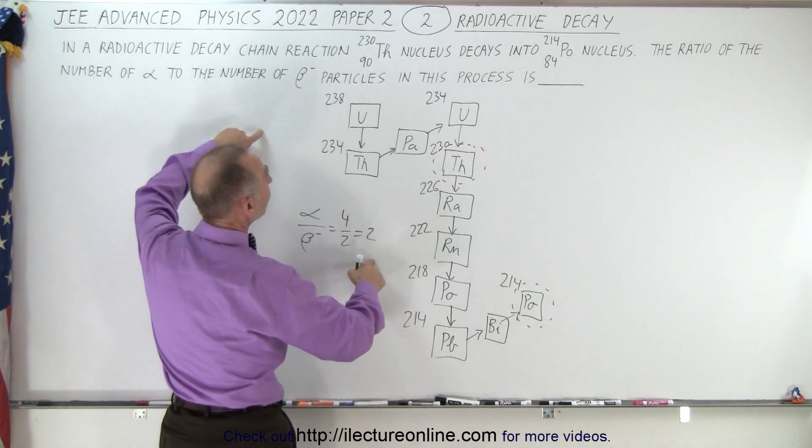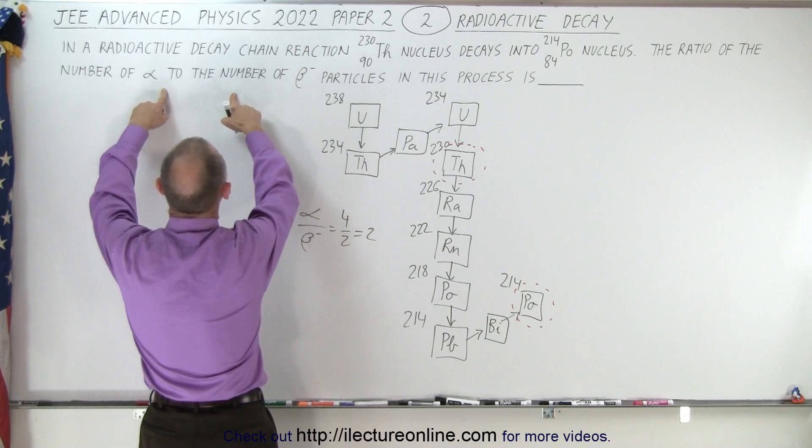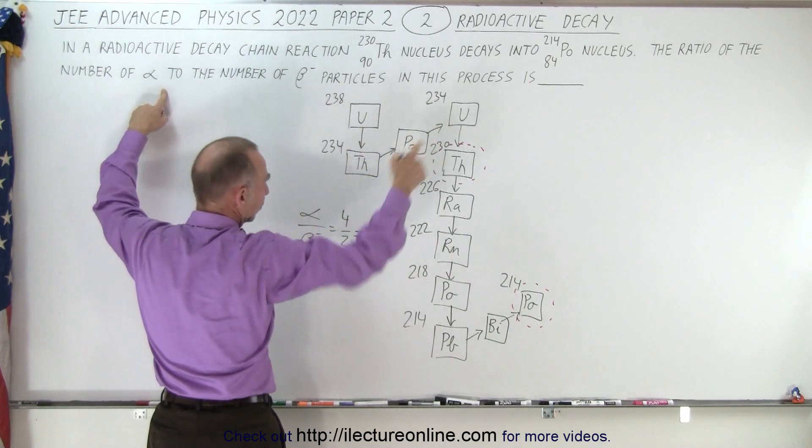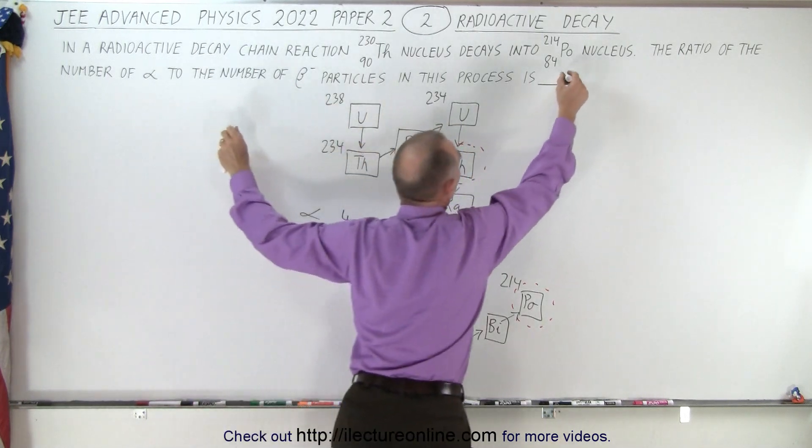Because that's what they want. They want the number of alpha particles to the number of beta particles, the ratio of that, which is 2, and that is the result that goes in here.